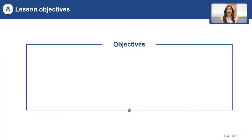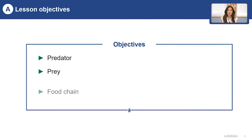Dear children, our lesson objectives are: predator, prey, food chain, and food web.